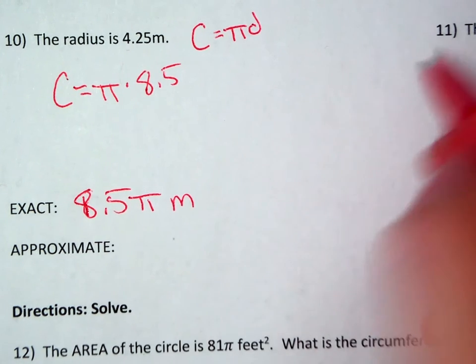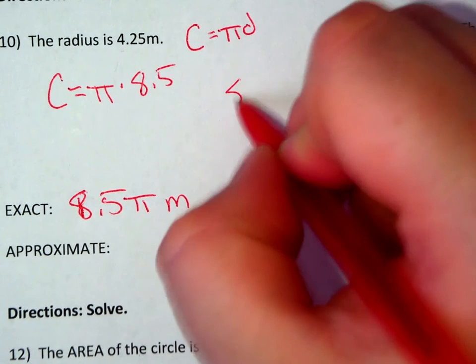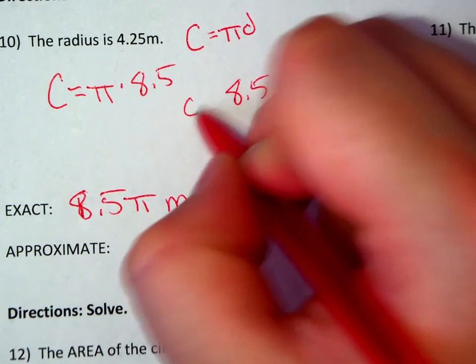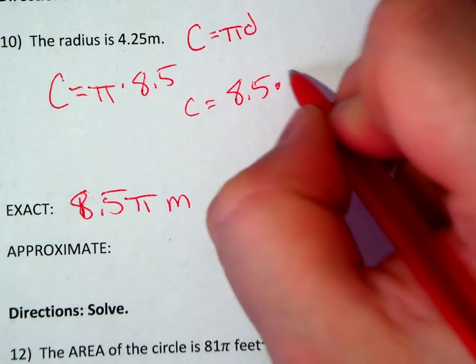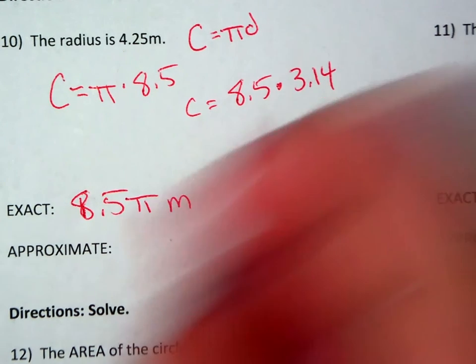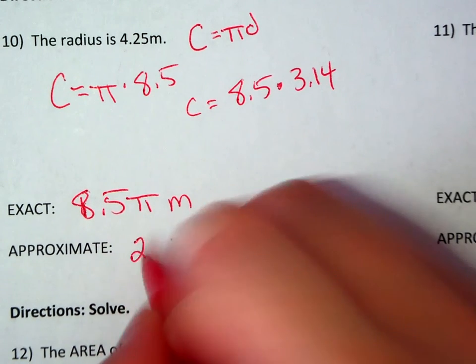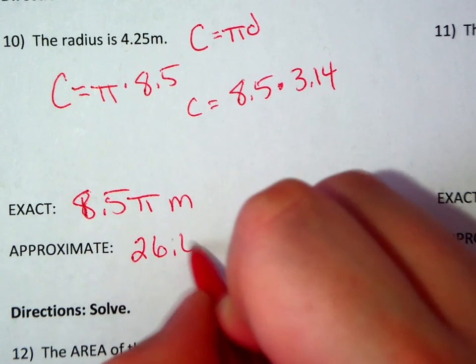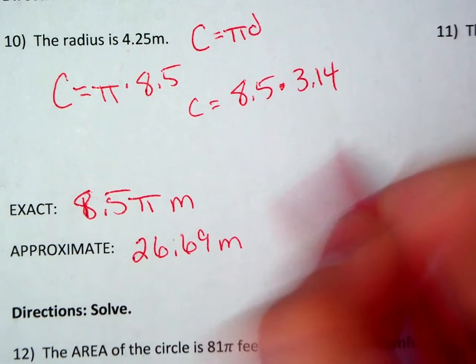In order to find my approximate answer, I take the 8.5 and multiply it by 3.14. 3.14 is my approximate value for pi. And I determine that the approximate answer would be 26.69 meters.